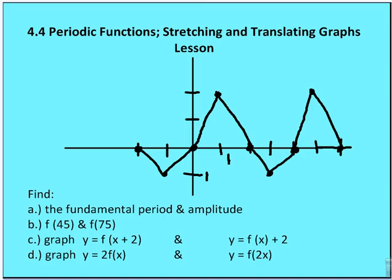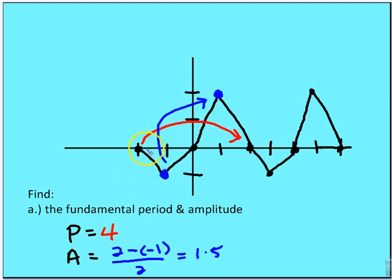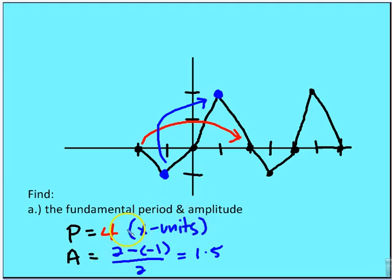Now for classwork: we'll find the fundamental period and amplitude. The fundamental period is 4 — measured from peak to peak or trough to trough, the period is 4 x units. The amplitude is the peak y value of 2 minus the minimum of negative 1, divided by 2, which equals 1.5. So amplitude equals 1.5.